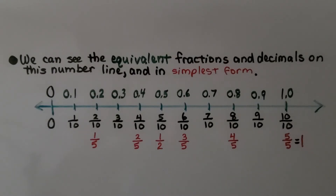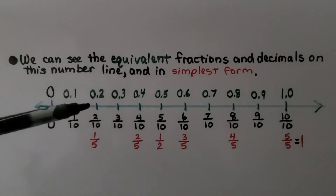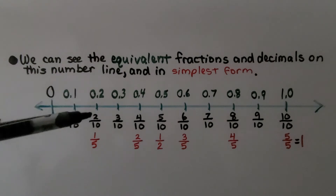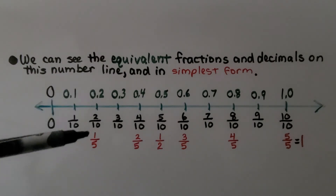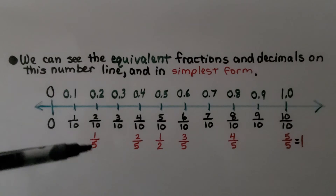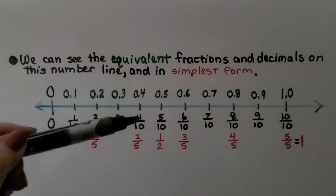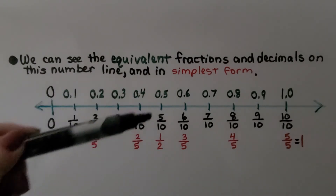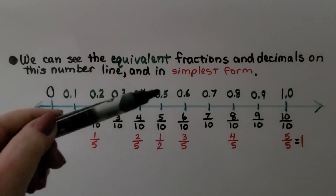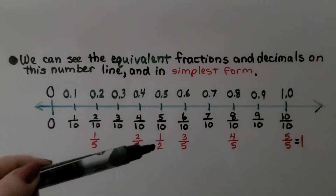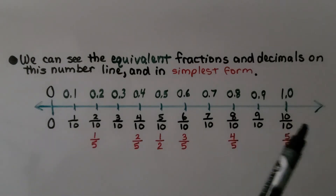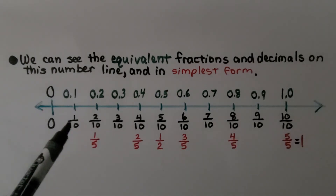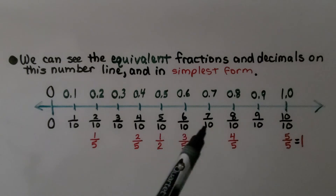We can see the equivalent fractions and decimals on a number line in simplest form. Looking at 2 tenths: here it is as a decimal, as a fraction, and in its simplest form. Four-tenths as a decimal, as a fraction, and in its simplest form. Five-tenths as a decimal, a fraction, and its simplest form. You can see some are already in their simplest form, while others need to be simplified.